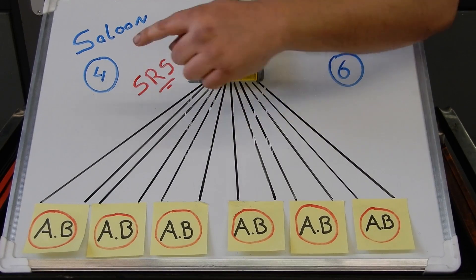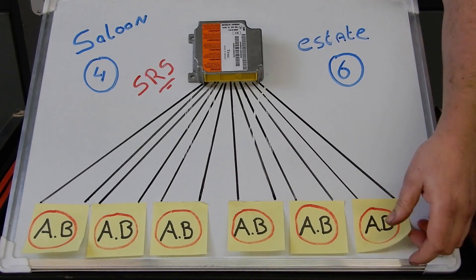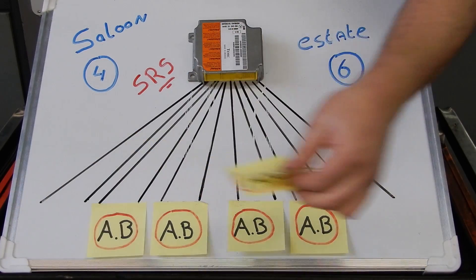But the saloon model has only got four airbags. Car manufacturers don't want to design a different module for each and every model or option they have. For example, when we put this unit from an estate into a saloon we will get fault codes on the two circuits we are not using. That's why they give us the option to code these units. When we change the settings from estate to saloon, this module knows what to expect, and the same module can be used for different models and options.